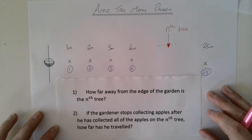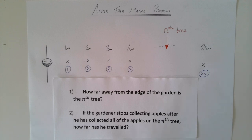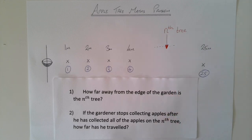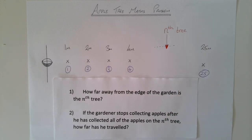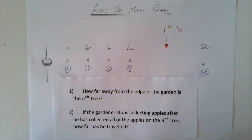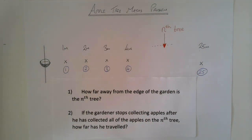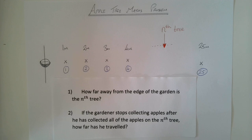So the two questions are: how far away from the edge of the garden is the nth tree, and if the gardener stops collecting apples after he's collected all of the apples on the nth tree, how far has he travelled altogether? For the final time, pause the video, show all of your workings, have a go at answering these two questions. Once you've finished, upload all of your work from this lesson onto Google Classroom so I can have a look at what you've done.